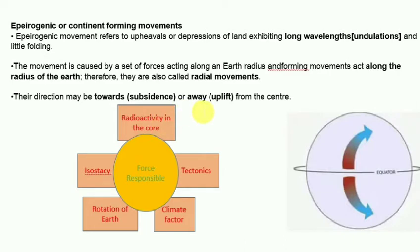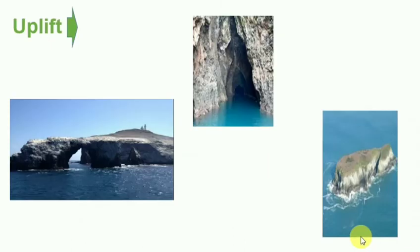The direction of radial movement may be toward the center — that is subsidence — or away from the center — that is uplift. In uplift, examples include raised beaches, elevated wave-cut terraces, sea caves, and fossiliferous beds above sea level.